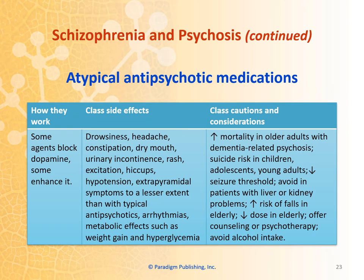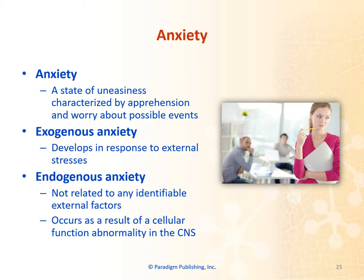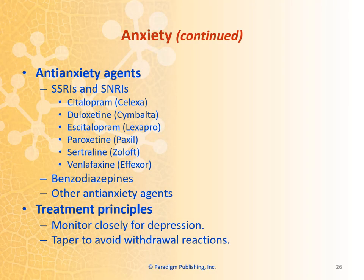Atypical antipsychotic medications work by blocking dopamine and some enhance it. Anxiety is a state of uneasiness characterized by apprehension and worry about possible events. Exogenous anxiety develops in response to external stressors, while endogenous anxiety is not related to any identifiable external factors and occurs as a result of cellular function abnormality in the central nervous system. Anti-anxiety agents include SSRIs and SNRIs as mentioned previously, benzodiazepines, and other anti-anxiety agents.